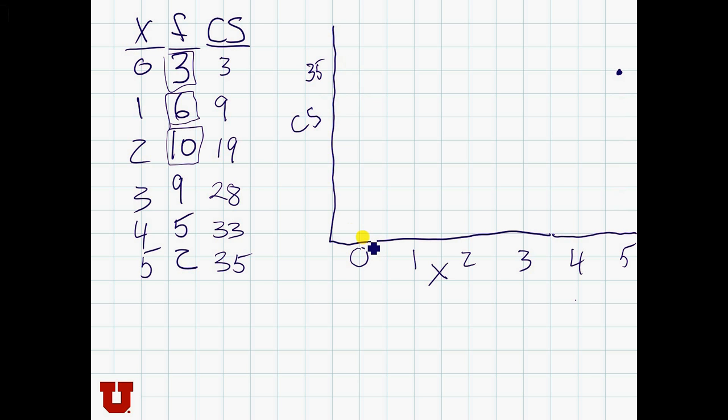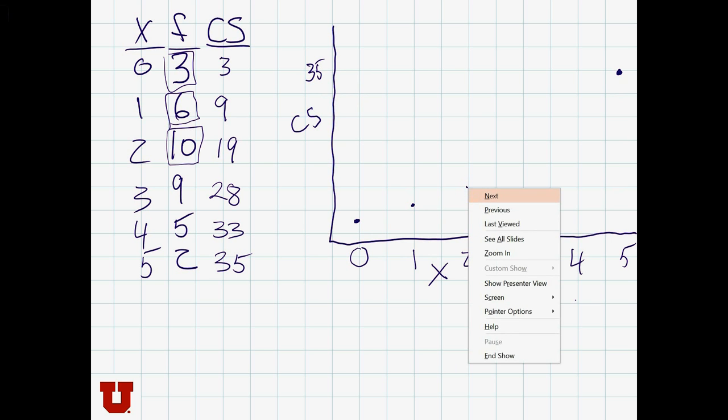So 0 is 3, down over here. 1 is 6, down over here. 2 is 10. Sorry. Oh, I've made a mistake.